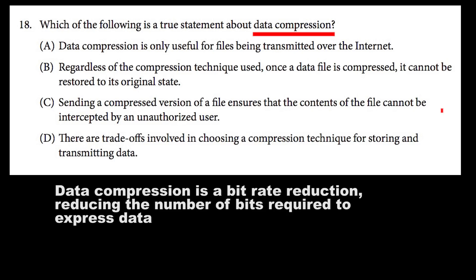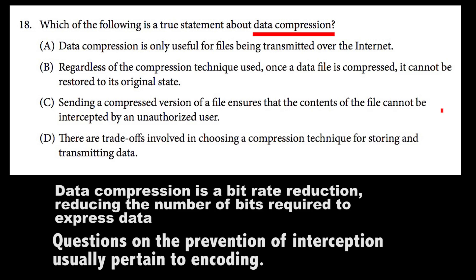Let's move on to C. Sending a compressed version of a file ensures that the content of the file cannot be intercepted by an unauthorized user. When we're talking about prevention from interception by an unauthorized user, we usually mean encoding — encoding is really what prevents interception. Compression, although it contributes to that, is not a great indicator of prevention of interception. Also, this one describes an absolute because it says 'cannot be intercepted.' We know that even encoded files can be intercepted by an unauthorized user, so C is not right.